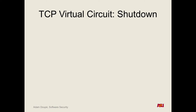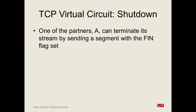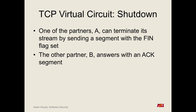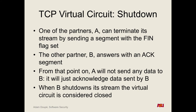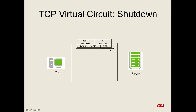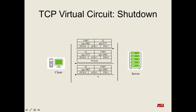Shutdowns: now we want to stop talking. Either side can decide to terminate its side by sending a packet with the FIN flag set. The other side acknowledges that packet and from that point A will not send data to B, but it can still accept data — it's a two-way street. Then when B shuts down its side by sending a FIN packet, everything is done. One side says 'I want to stop talking,' the other says 'great, I acknowledge that, and here's some data I'm sending you.' Then the FIN packet is sent back and the TCP connection is closed.